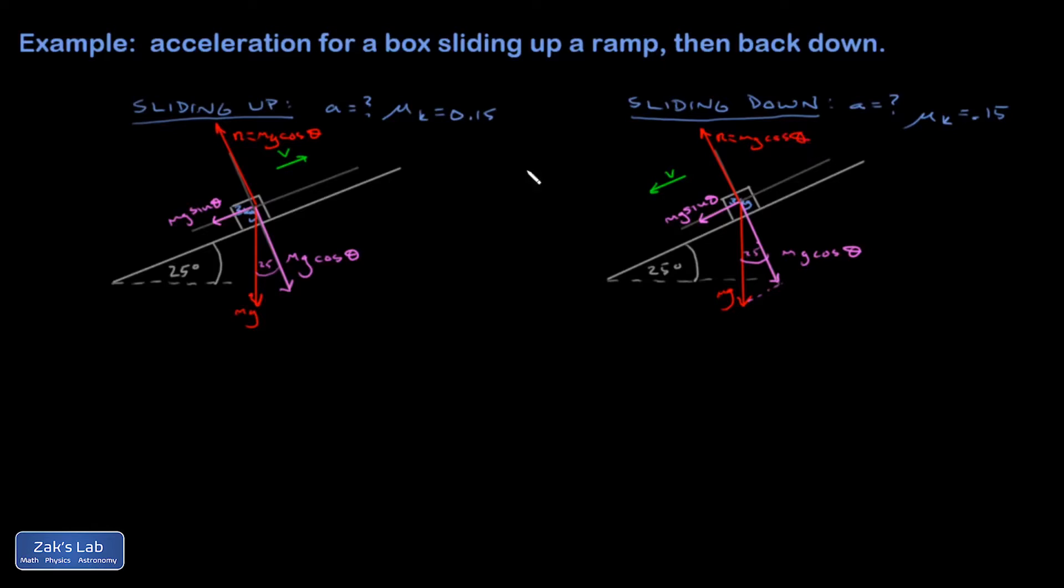And then we get to the critical physical difference between these two problems. And that is the direction of the friction vector. So if a block is sliding up a ramp, friction points in the direction that opposes the direction of the slipping.